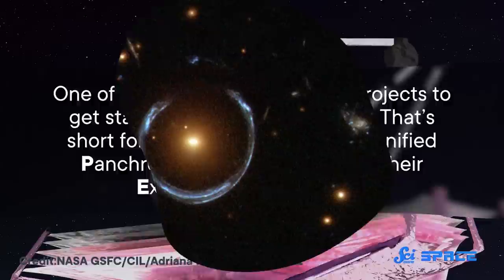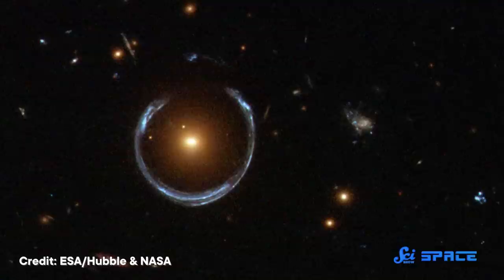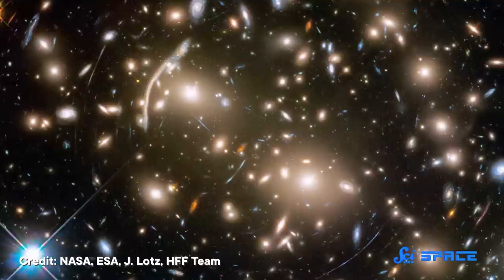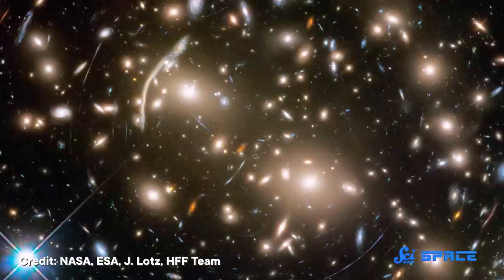This project, led by Dr. Rigby, will use gravitational lensing to extend the view of Webb and see even further into the past. You see, massive objects like clusters of galaxies in between us and distant objects bend spacetime like a lens. That magnifies the stuff behind it and lets us see it with higher resolution.